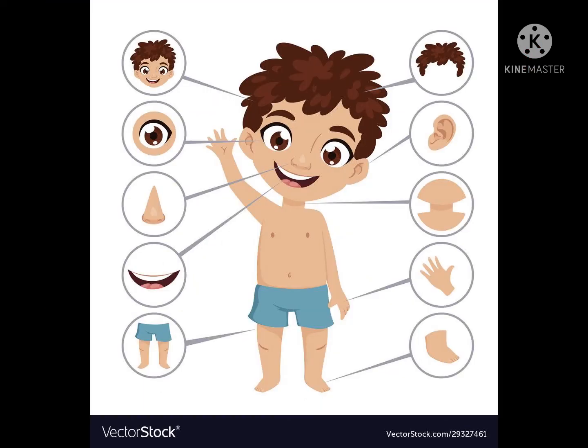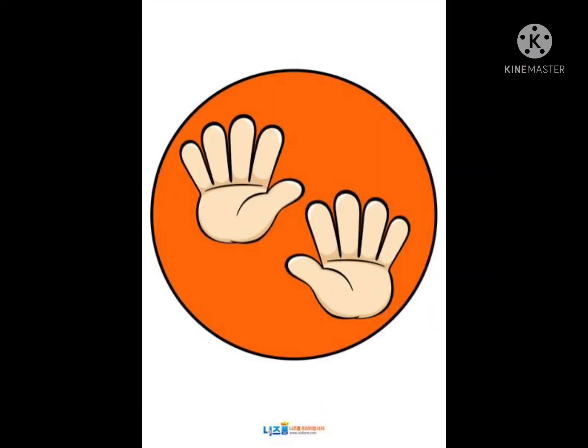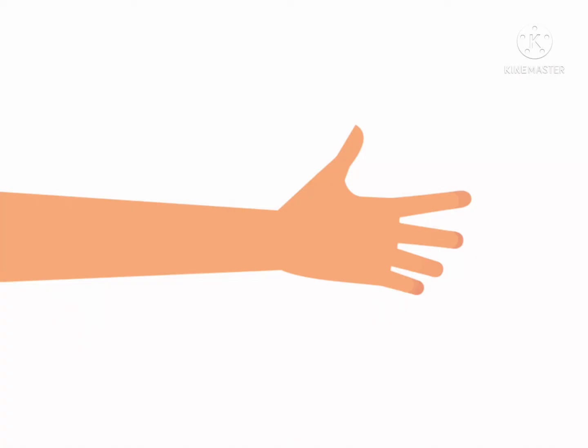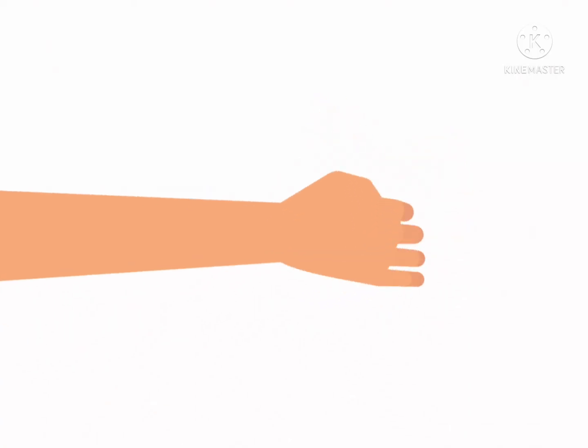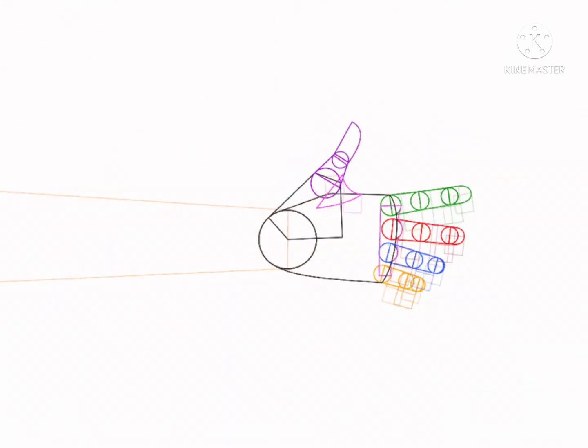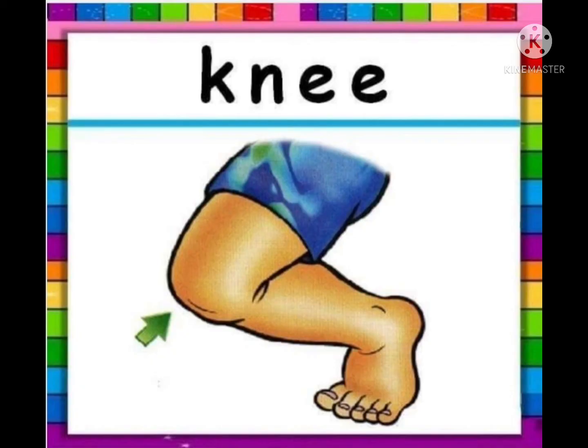Let's revise. Hand, we call it haat. Finger, ungli. Knee, guthne.